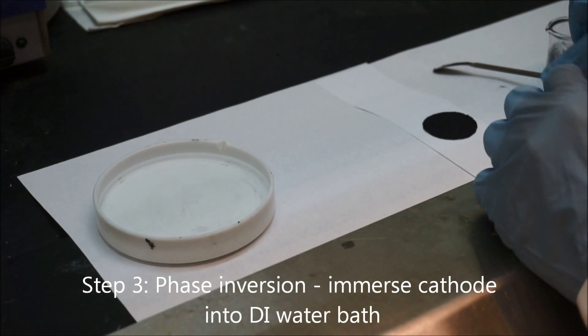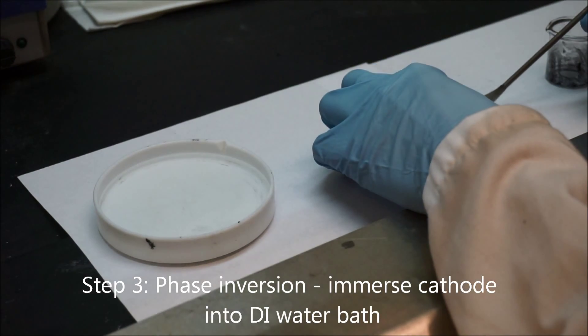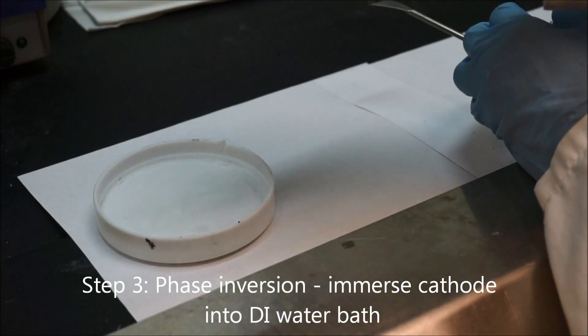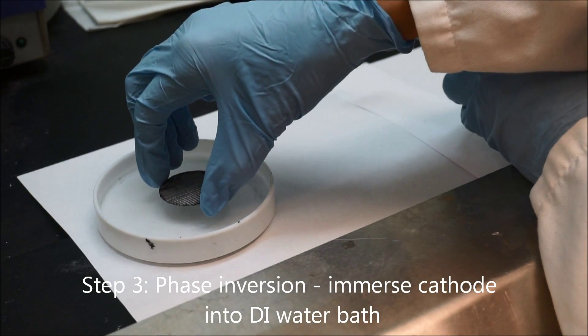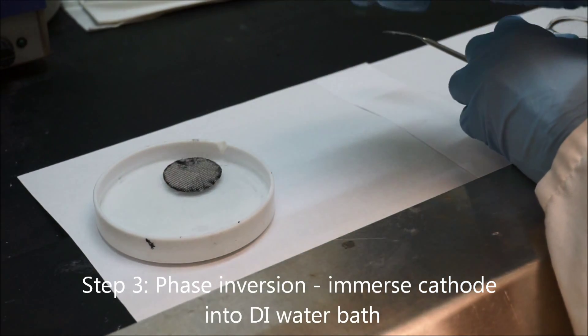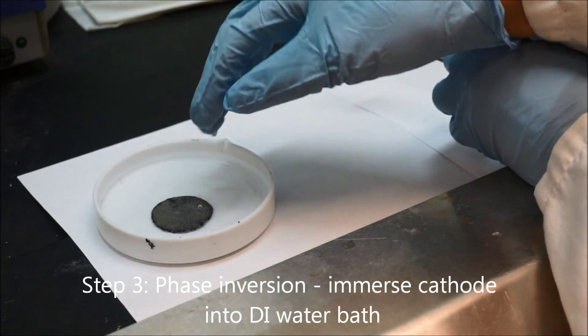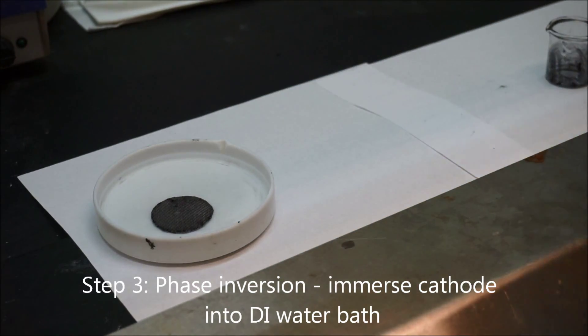After spreading the active carbon mixture onto the stainless steel mesh, the next step is to put the active carbon cathode into the DI water bath to go through phase inversion process. Remember to put the active carbon mixture side towards the bottom, and then leave the active carbon air cathode for 15 minutes.